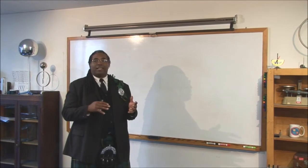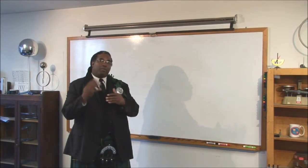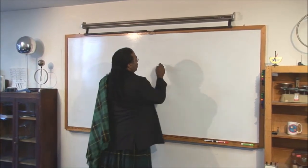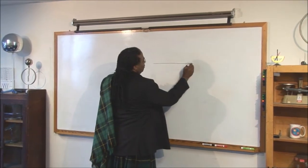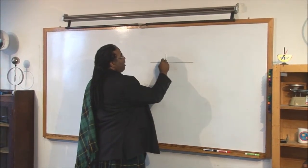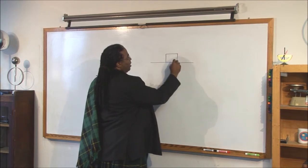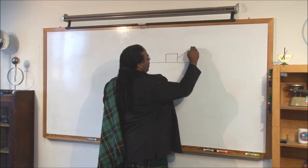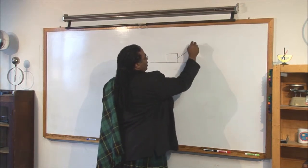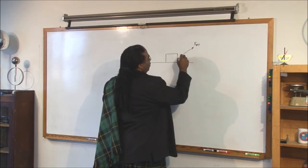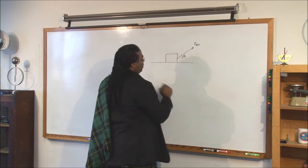Let's take the problem a little bit more advanced. The first time, we had a block sitting on a surface with an applied force, but the applied force was parallel to the horizon. Let's make this a little bit more advanced. This time, we'll take our applied force and make it at an angle with respect to the horizontal.